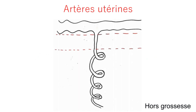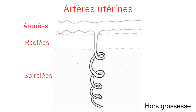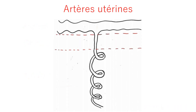Hors grossesse, voici comment se présentent les artères utérines, qui se déclinent en artères arquées puis radiées pour finir en artères spiralées, qui perfusent la chambre intervilleuse au niveau du placenta. Dans le cas de Claire, un remodelage est nécessaire pour que le sang arrive à grand débit et à basse pression.